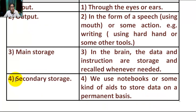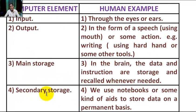Number 4 — Secondary storage: in a computer, secondary storage includes pen drive, CD, external hard disk, and floppy. The human example is that we use notebooks or books or some kinds of aids to store data on a permanent basis.